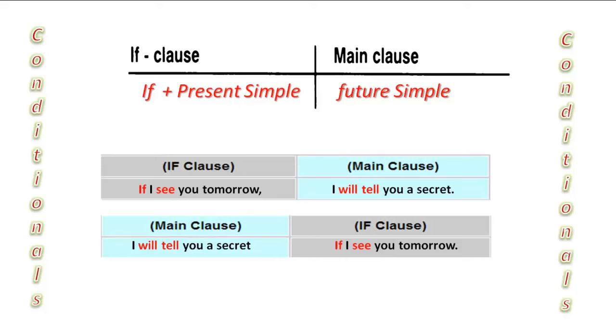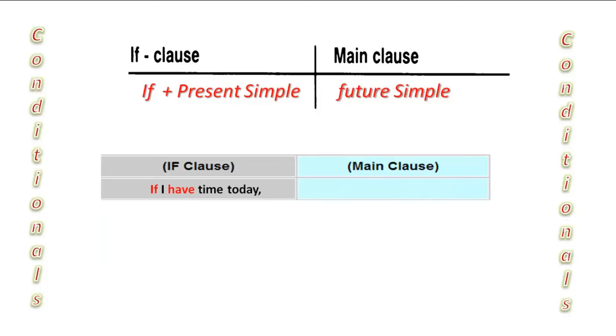This means that it is possible that I will see you tomorrow, so I am talking about a real situation. Note that we never use will or won't in the if-clause. I cannot say if I will see you tomorrow. If I have time today, I will phone my friend, or I will phone my friend if I have time today.